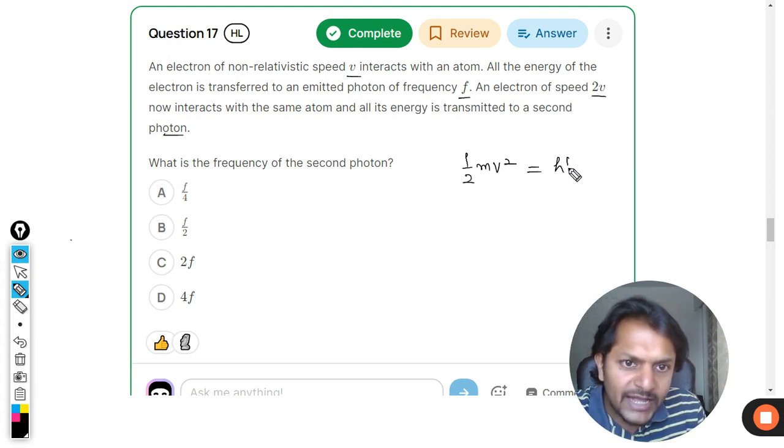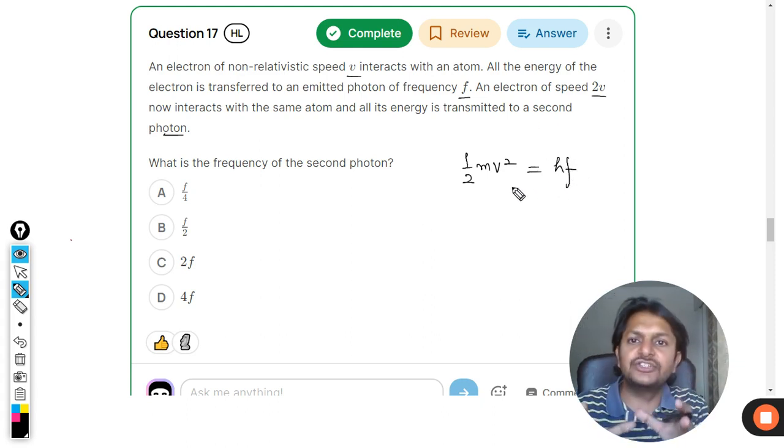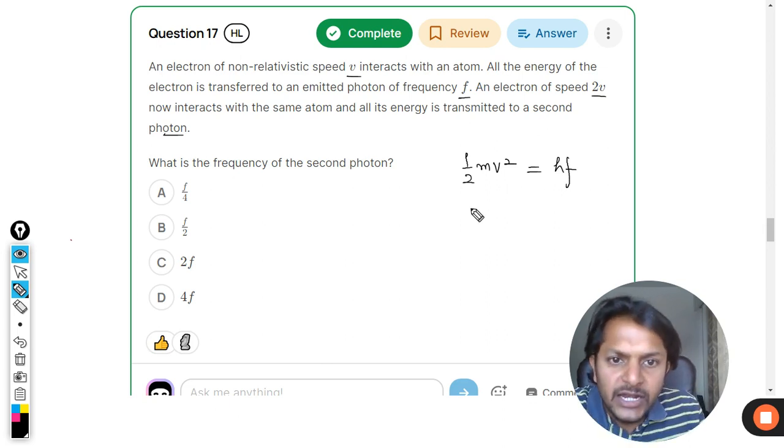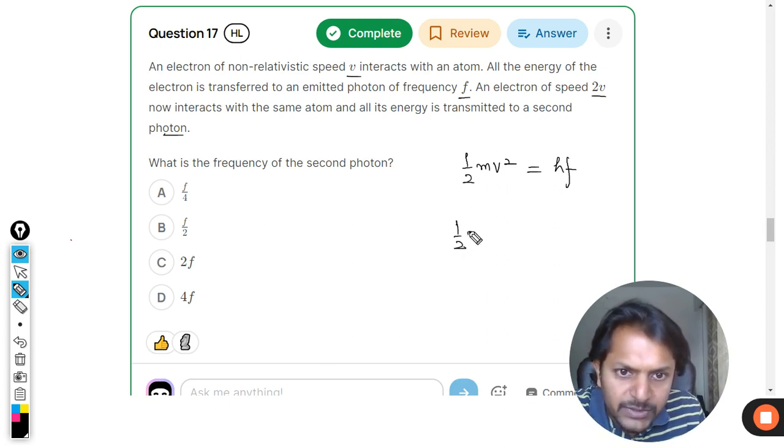Now this is equal to h into f, because this energy is now converted into a photon. The velocity is doubled, it becomes 2v.